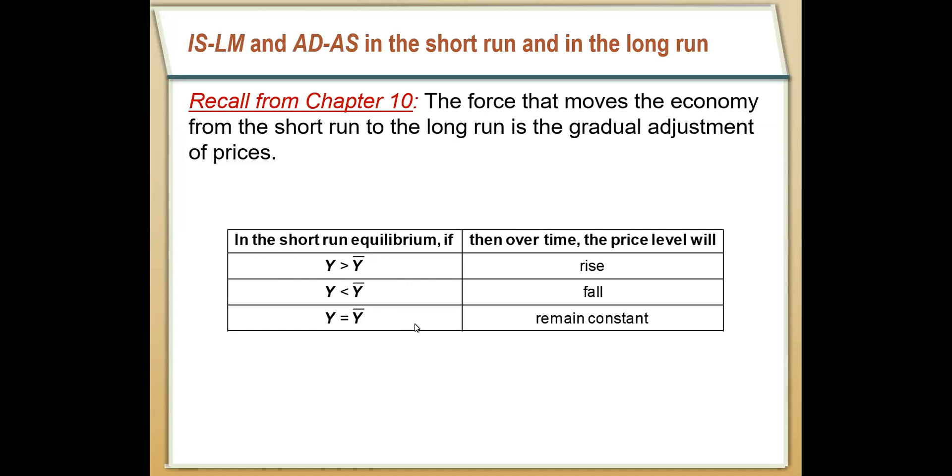We can look at different long run effects of changes in the IS-LM model by combining what we learned in Chapter 10 with what we've learned in the last couple of chapters. So let's take, for example, a negative IS shock.